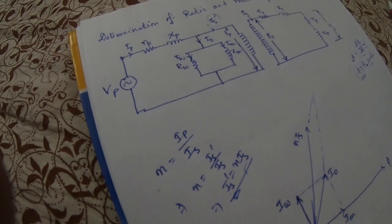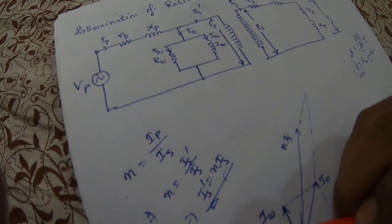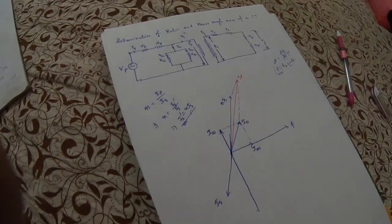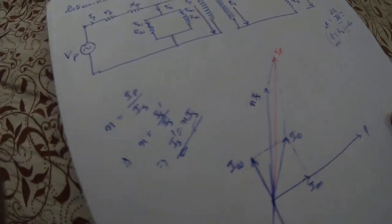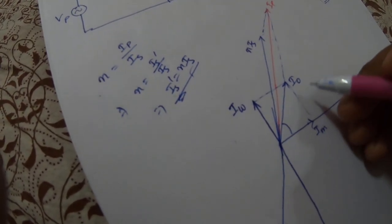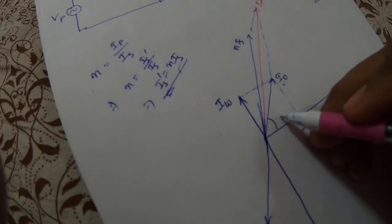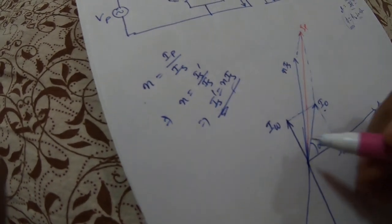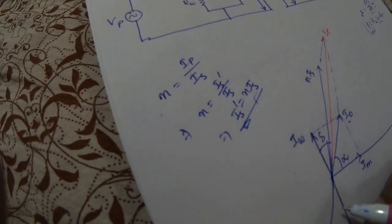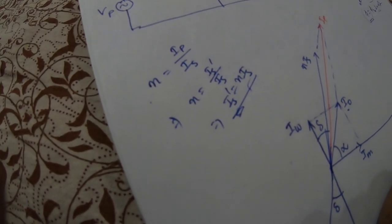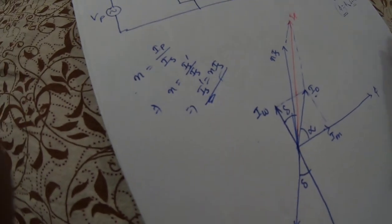Drawing Ip with a different color: after taking the phasor sum of Is_dash and I0, you get the value of Ip. Now consider some angles. The angle between the no-load component and the flux is denoted alpha. Another angle is the delta angle — delta is the difference between Is and the phasor of Ip.